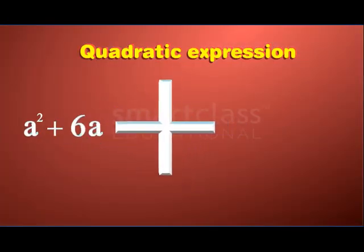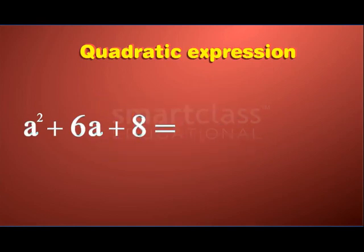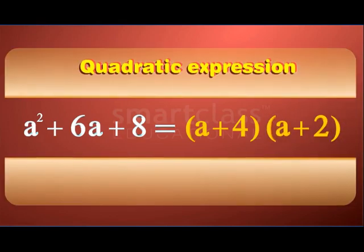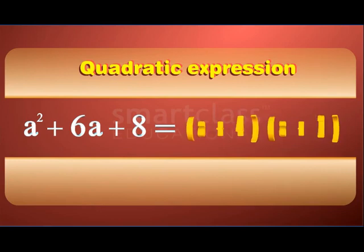Here it is. a² + 6a + 8 can be written as a product of (a + 4) and (a + 2).